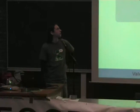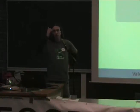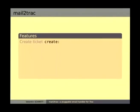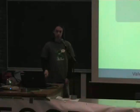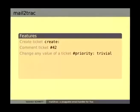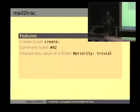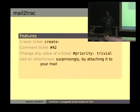Mail2Trac has a few features I'll explain quickly. You can create tickets just by sending an email to your Trac with the subject containing 'create:'. You can comment on tickets — the Mail2Trac plugin parses the subject looking for a hash ticket ID. You can change the priority or any fields of a ticket, like components and so on, by using tags in the mail. You can also add an attachment by attaching it to your mail.